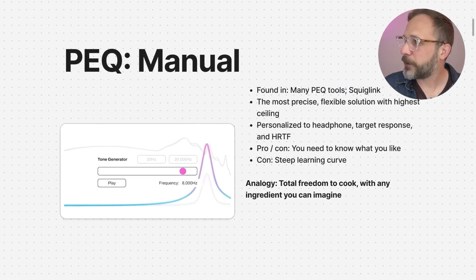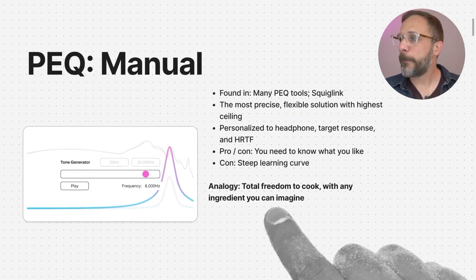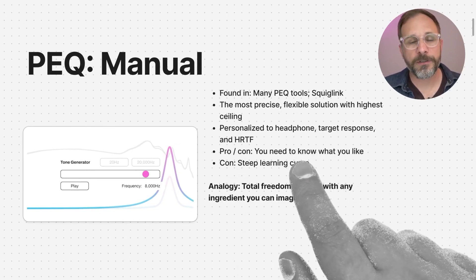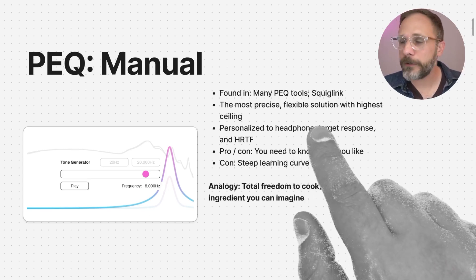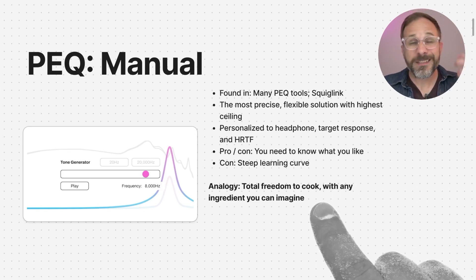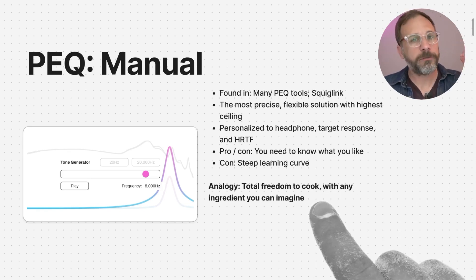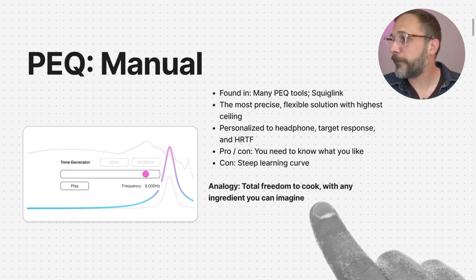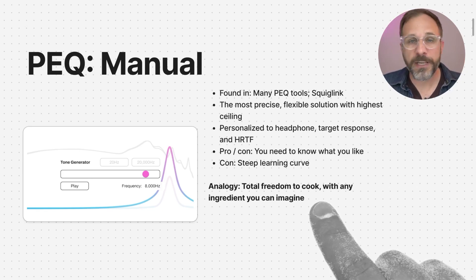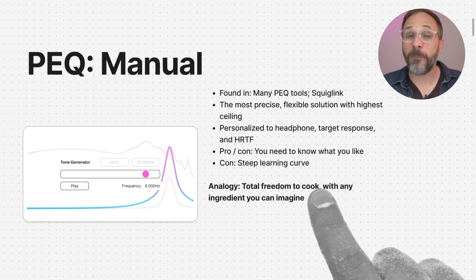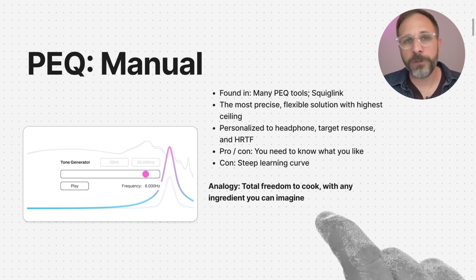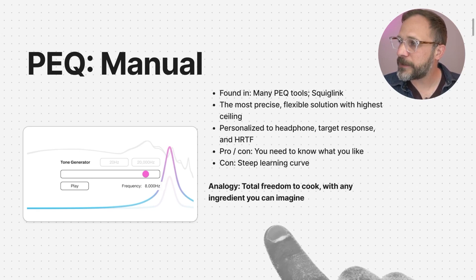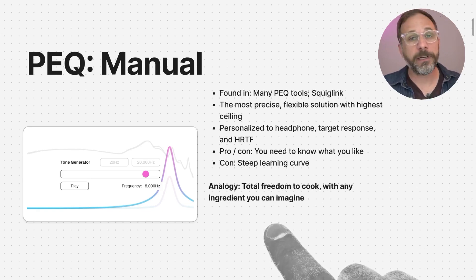That leads us to our final form of EQ: full manual parametric EQ. This is what you'll get access to with a lot of the tools we'll talk about in our next video, but you can also use tools like Squiglink to do manual parametric EQ. This is the most precise, flexible solution with the highest ceiling in terms of sound quality, because it's going to be personalized to your headphone, your own target response, whatever you're going after, as well as your own personal HRTF. This has the steepest learning curve by far, but once you figure it out, if you know your preferred sound signature, this is the one that gives you the most flexibility to achieve it. My analogy: you've got total freedom to cook and access to every ingredient you can imagine.